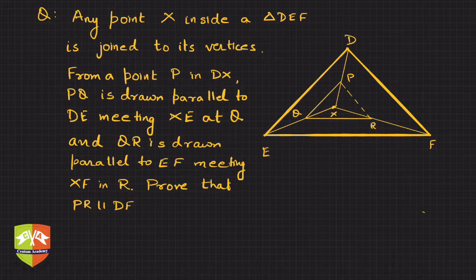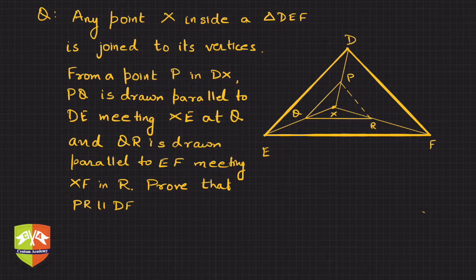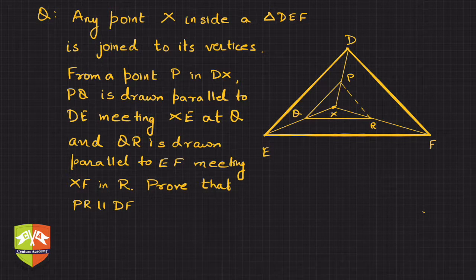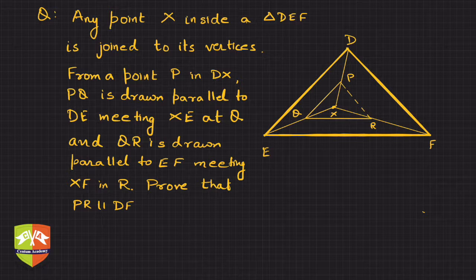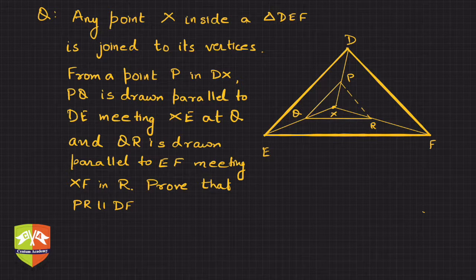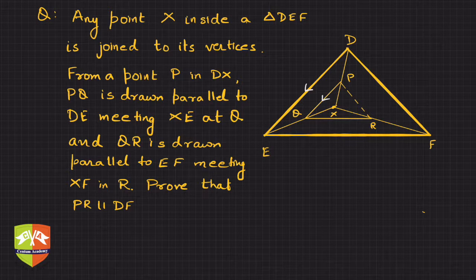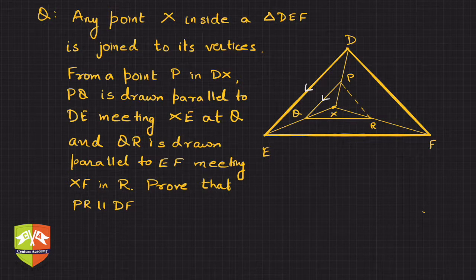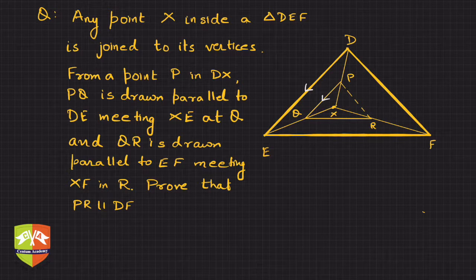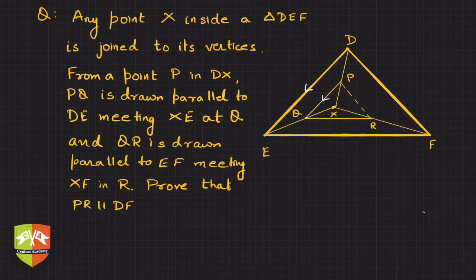From a point P in DX, PQ is drawn parallel to DE. So first information is PQ is drawn parallel to DE and meeting XE at Q. So this point is Q.